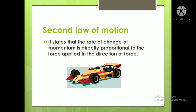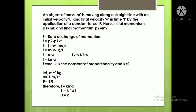Now let's derive the second law of motion. An object of mass m is moving along a straight line with an initial velocity u and final velocity v in time t, by the application of a constant force. This derivation is very important. The initial momentum is p1 = mu and the final momentum is p2 = mv.